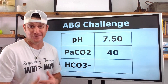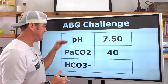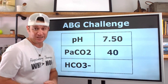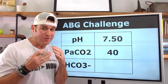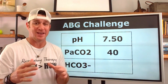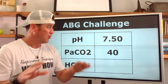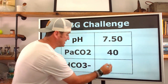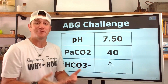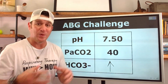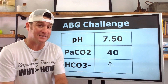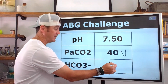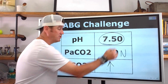Here we see something a little different: an alkalotic pH with a normal CO2. We're already tracking — why are we alkalotic? Not because of the CO2, so it has to be because of an elevated bicarb. This is going to interpret as uncompensated metabolic alkalosis.